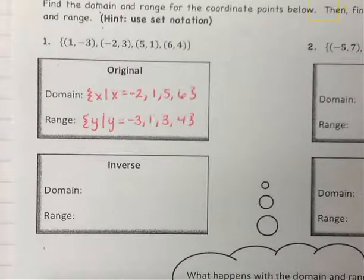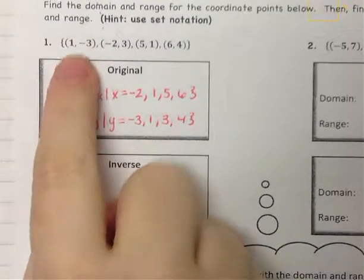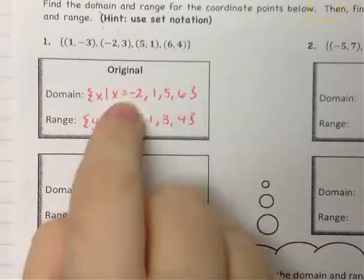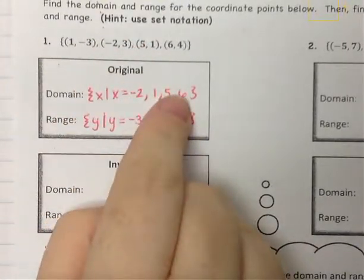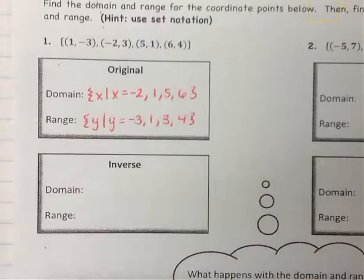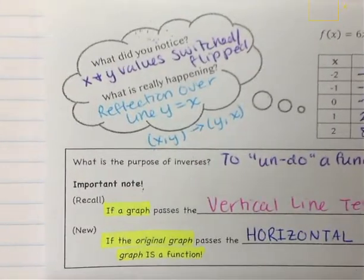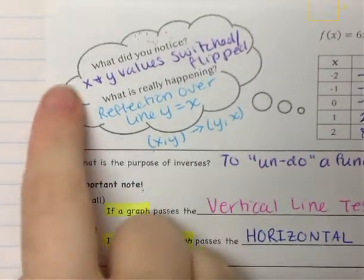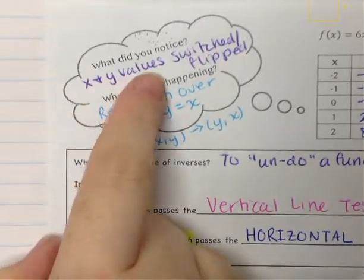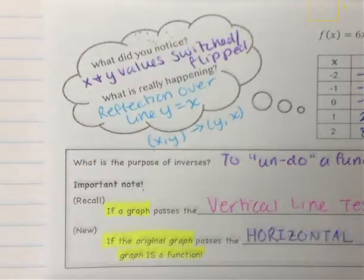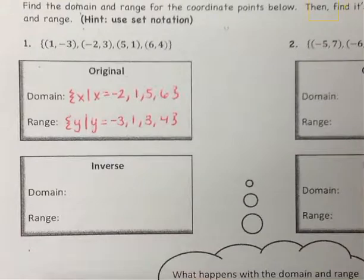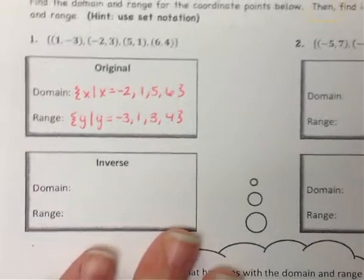So these are the original domain and range in set notation. The original is a function because none of the x values repeat — we have four different ones, so it is a function. Now we're going to find the inverse. If we remember, all that's really happening is the x and y values are being switched or flipped. So the x's become the y's and the y's become the x's.